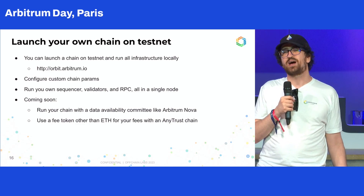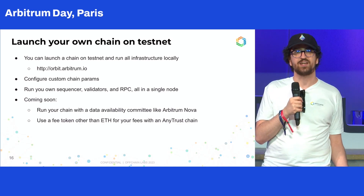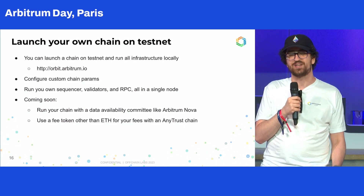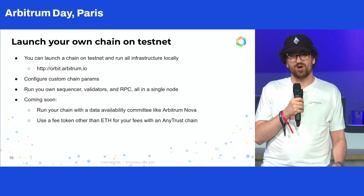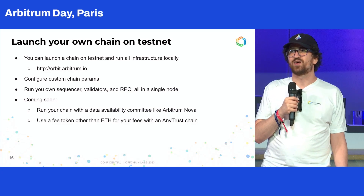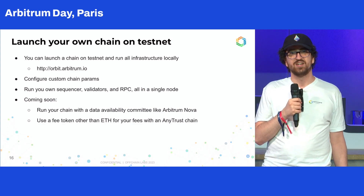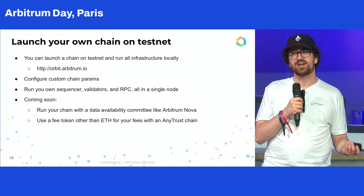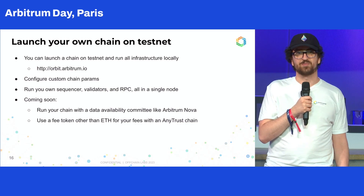We're going to be continuously expanding this tool so dev teams can feel the power and experience what it's like to work with a chain themselves without needing to talk to anybody — a fully local experience. The next two big features we're adding: one is support for AnyTrust chains in addition to the current rollup chain support. The other, which I know is very exciting to a lot of dev teams, is the ability on AnyTrust chains to use a token other than ETH as their fee token — so projects will be able to use their own token as the fee token on their chain, which is a really powerful enabler.